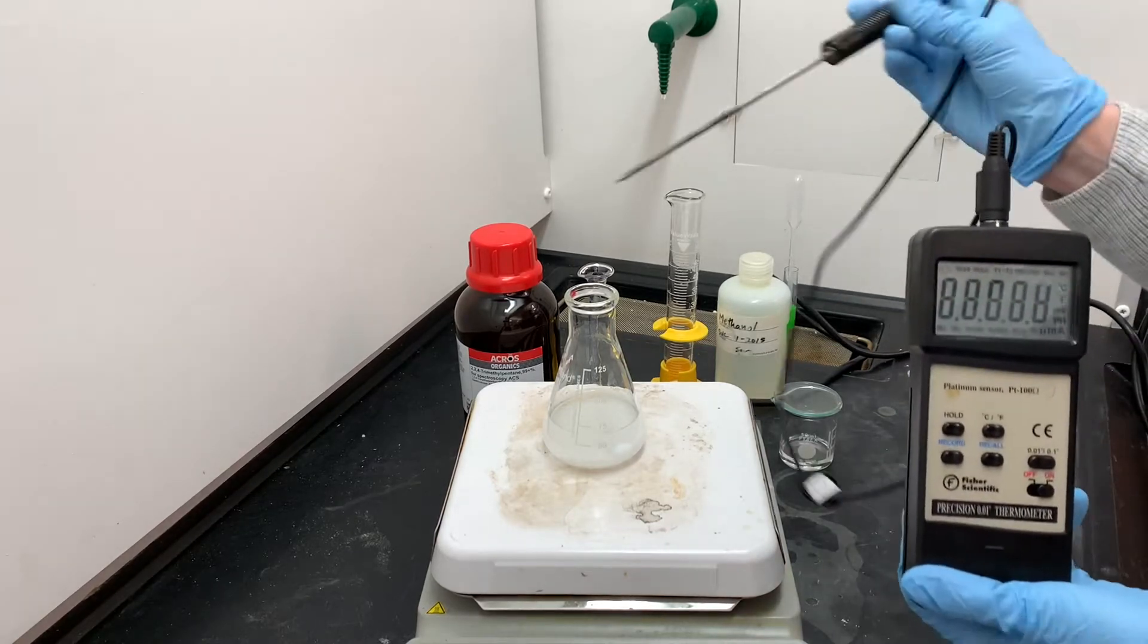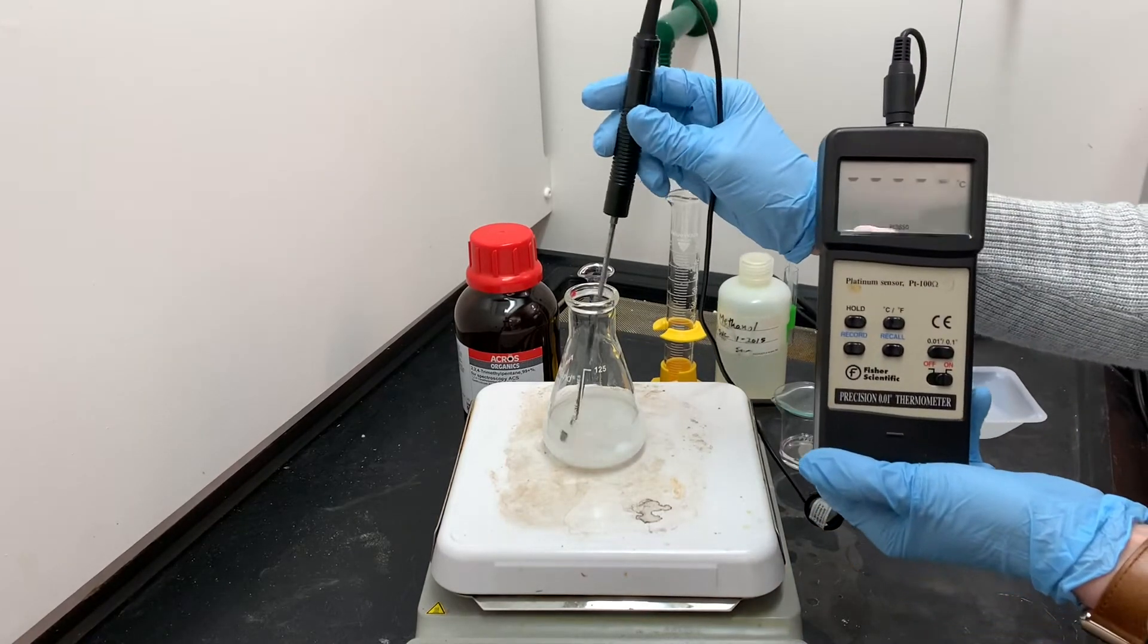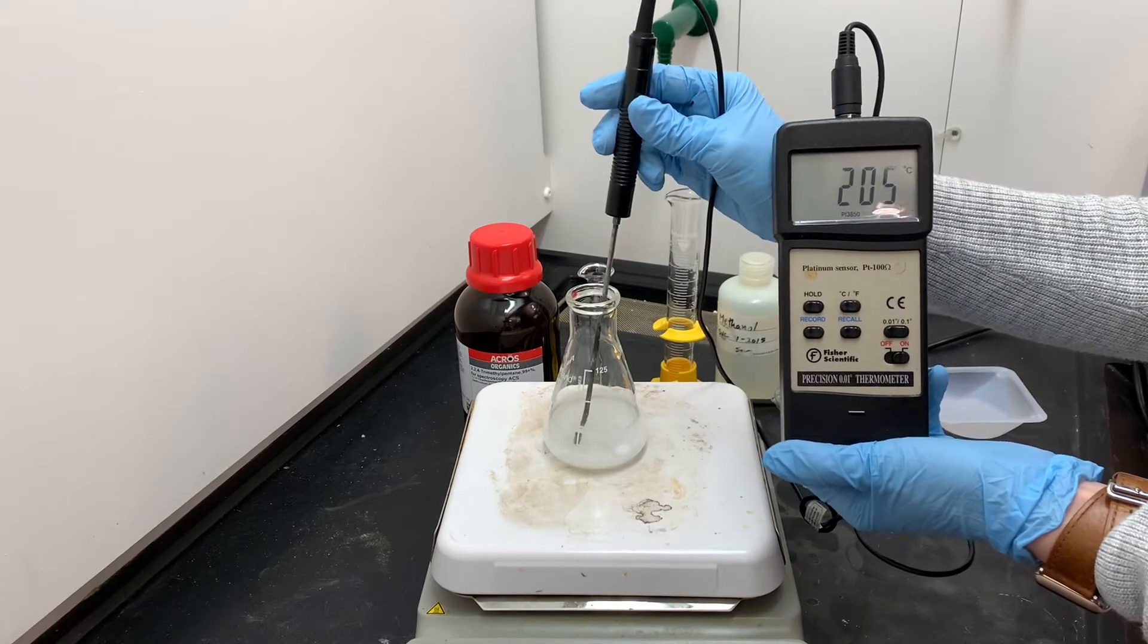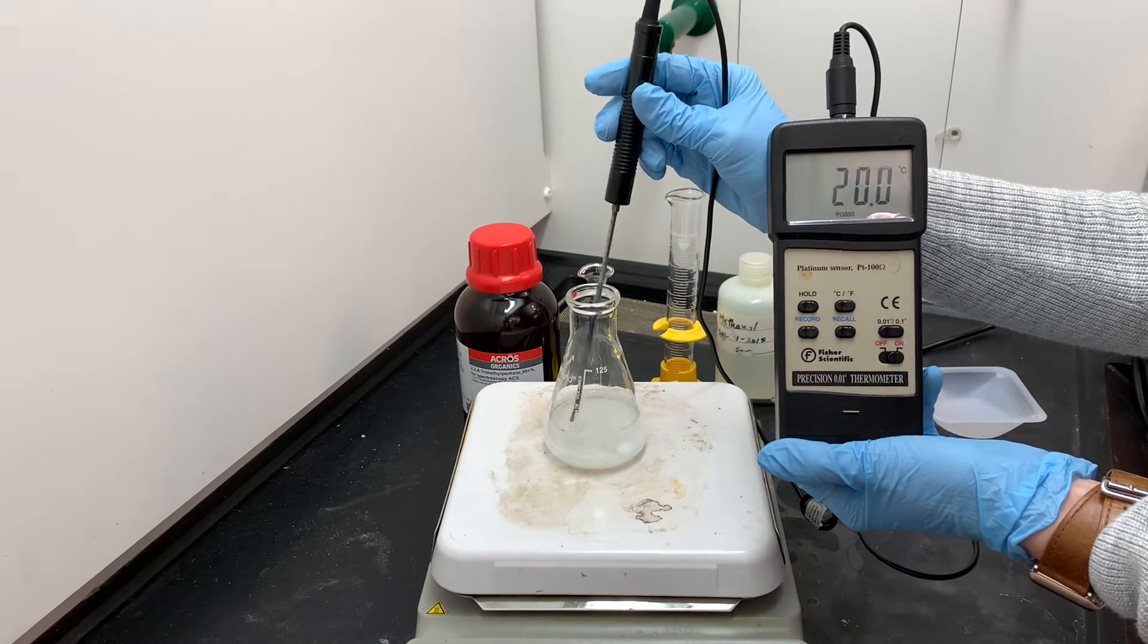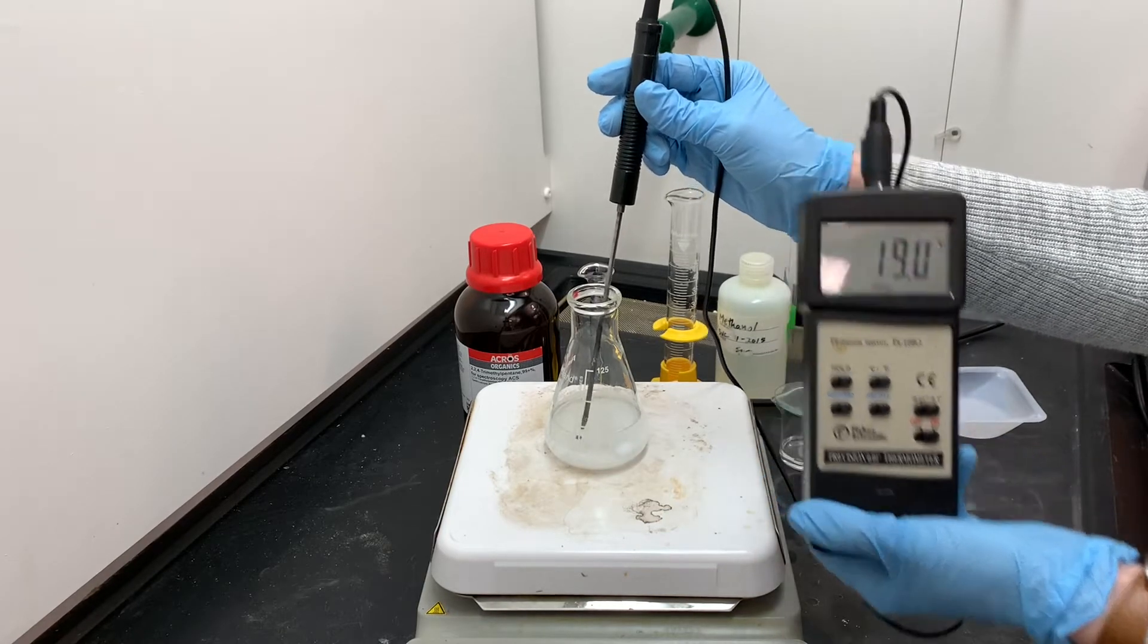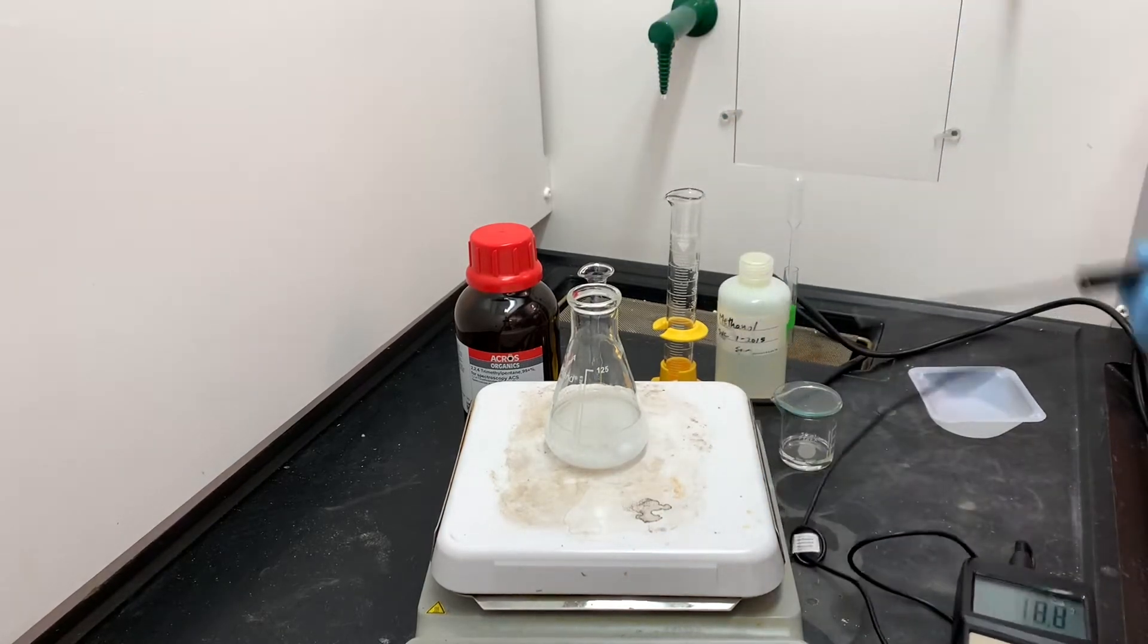While the urea is dissolving, I'm going to monitor the temperature of the solution just to make sure that I don't get up to the boiling point of methanol. Methanol boils at about 65 degrees Celsius, so I want to try to keep this solution around 55 to 60 to stay pretty far away from the boiling point.